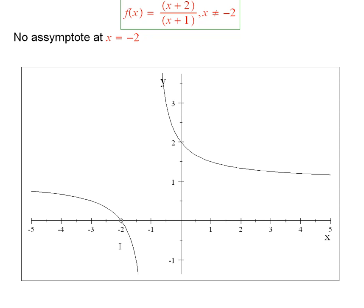Now, where does it have asymptotes? The function has an asymptote when x is equal to negative 1. It has a vertical asymptote.